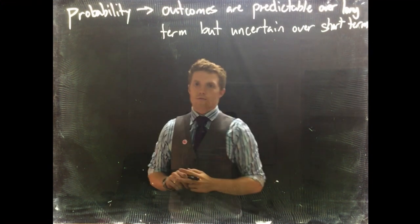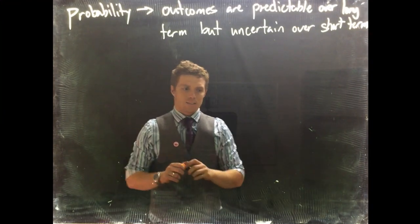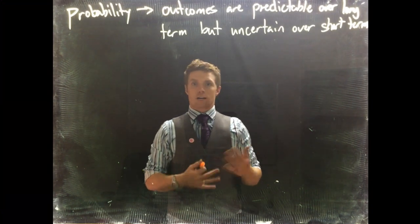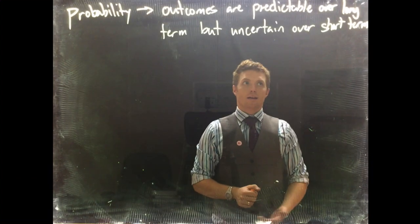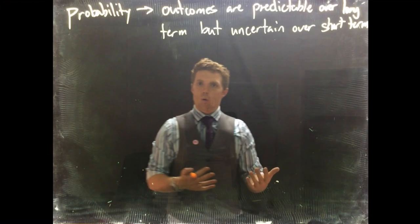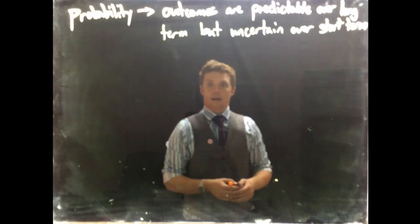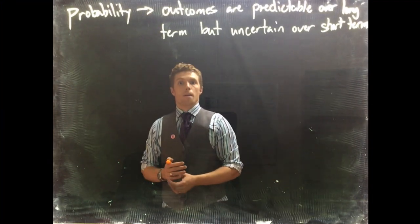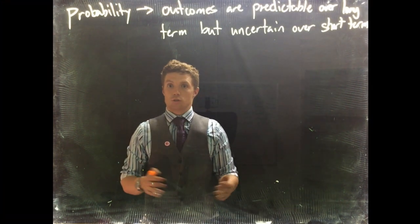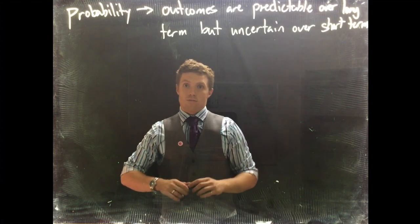We fall into a trap a lot of times by thinking that we know what's going to happen next. We think that because a coin has landed heads a whole bunch of times in a row, that the next time it should be tails. Now when we flip a coin over and over again, we know that in the long run it's going to be 50% heads, 50% tails. But it is totally possible to have long runs of heads or long runs of tails in the short term.